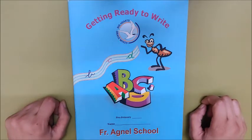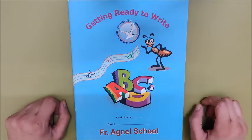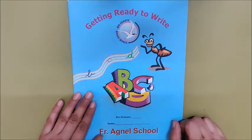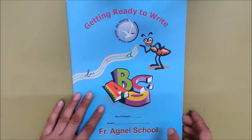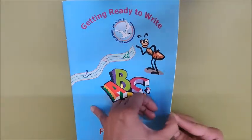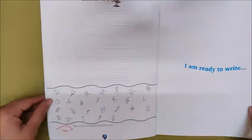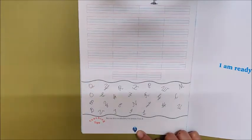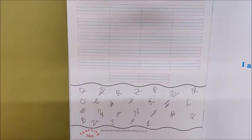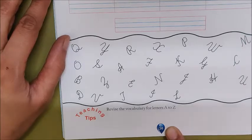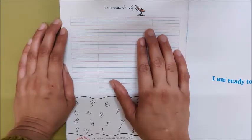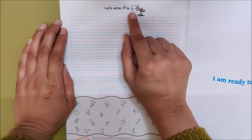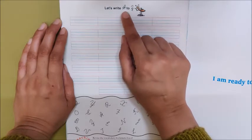Hello children, today we are going to do work in our book Getting Ready to Write. You have to open the last page of this book which is page number 36. 3 tens and 6 ones is number 36. And what do we have to do on this page? We have to write A to Z. Today we will write here A to Z.